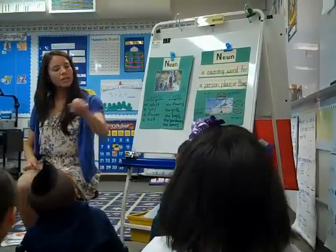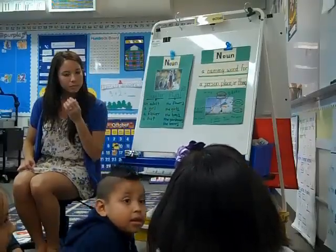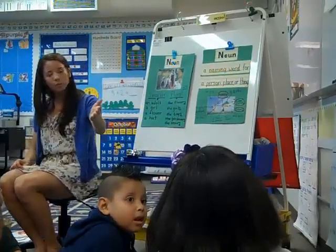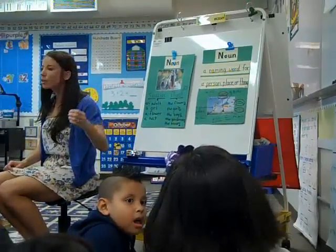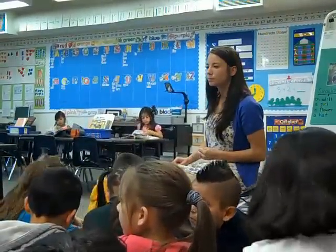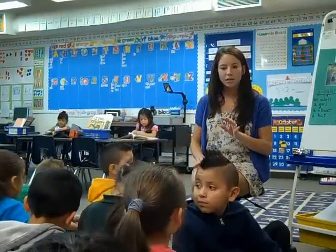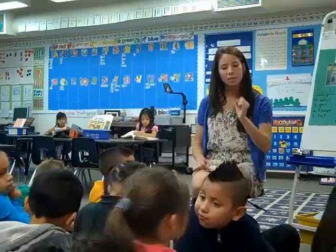What is a noun? Can you give me an example? A noun — a girl. A girl. Beautiful. A girl is an example of a noun. Isaac, what's another example of a noun? A boy is a noun. Perfect. And let's see — Stephanie, what's another example of a noun?